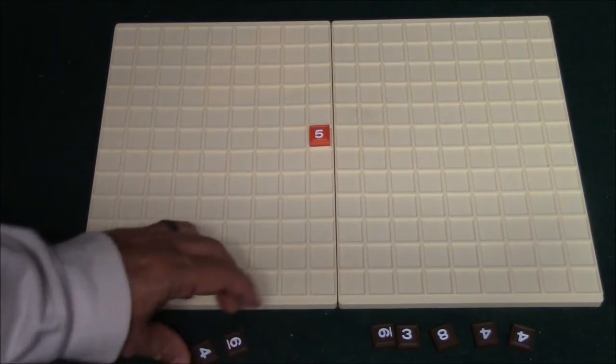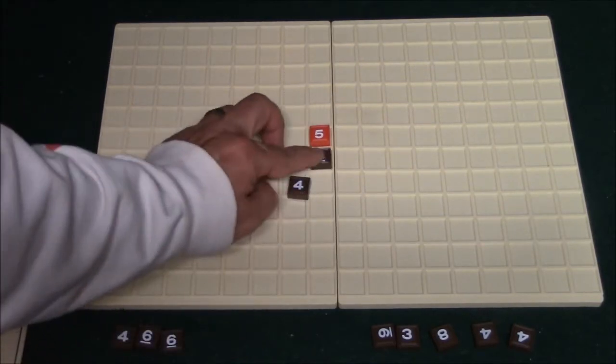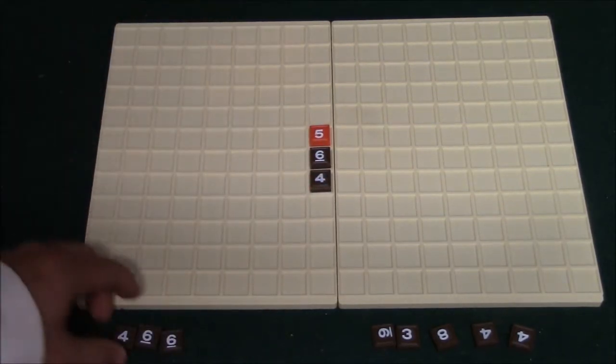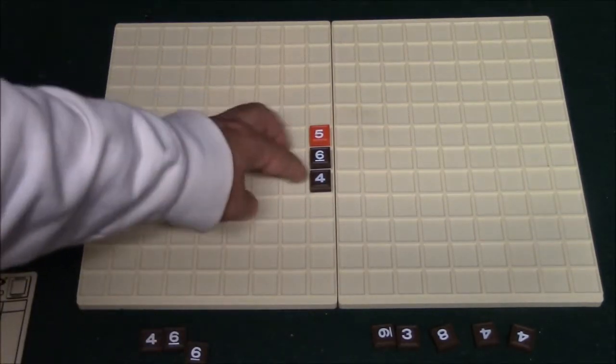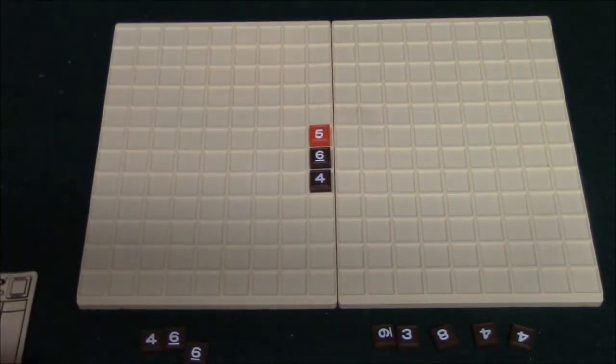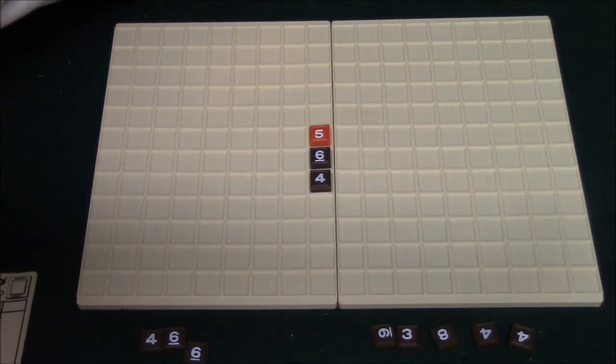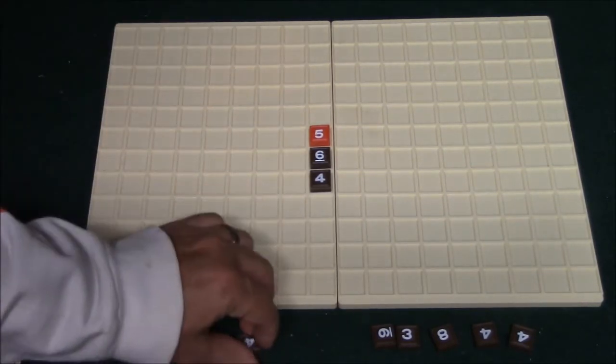So I'll go ahead and get started here, and let's just say I decide I'm going to place the six here and the four here, and that is going to give me a total of 15 points. So I will mark that down on the score sheet, and I will draw two tiles, and it will go on to player two.